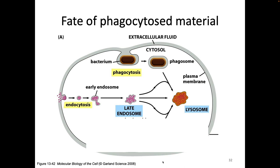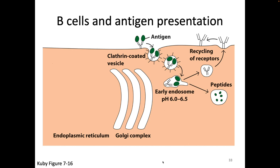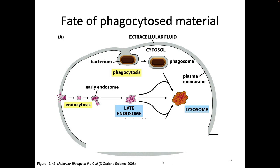Here you can see that receptor-mediated endocytosis process with the B cell. Our B cell can bind to antigen using its B cell receptor. When that happens, that triggers the cell to internalize both the receptor and the antigen into an endosome. The B cell receptor gets recycled back up to the surface, while the antigen that has been brought in gets broken down. So B cells acquire their antigen for MHC class 2 presentation by receptor-mediated endocytosis, while macrophages and dendritic cells acquire their antigen by phagocytosis.